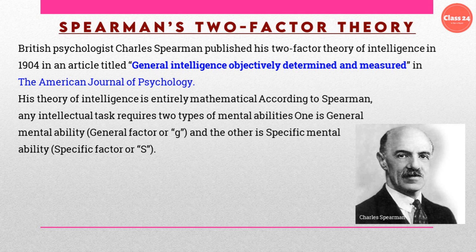His theory of intelligence is entirely mathematical. According to Spearman, any intellectual task required two types of mental abilities: one is general mental ability, or general factor, referred to as small 'g', and the other is the specific mental ability, the specific factor, or 's' factor.